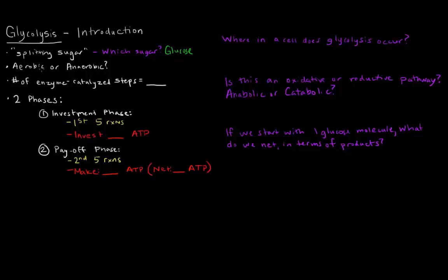Is this process aerobic or anaerobic? What we'll find out is that this process, well first of all, what is aerobic? Aerobic means requires oxygen. Anaerobic means does not require oxygen. So glycolysis is actually an anaerobic process because no oxygen is required for glycolysis to occur.